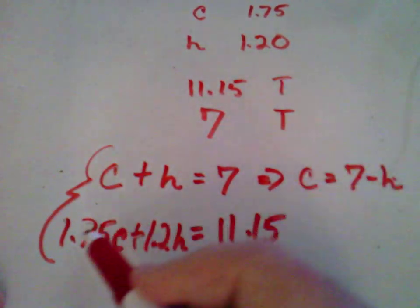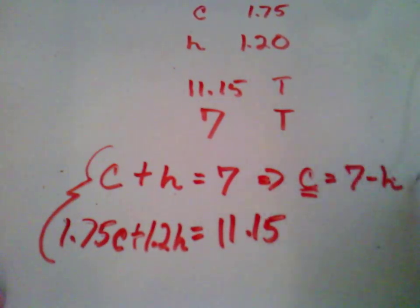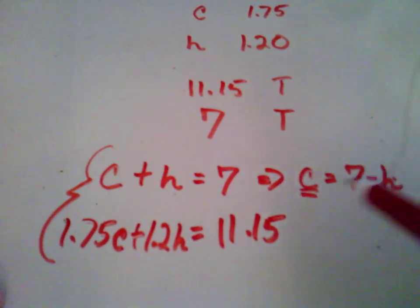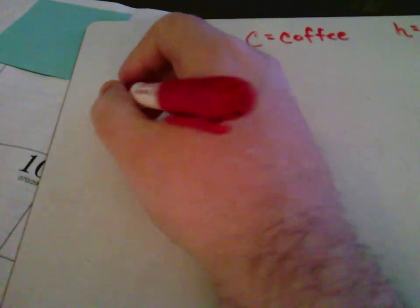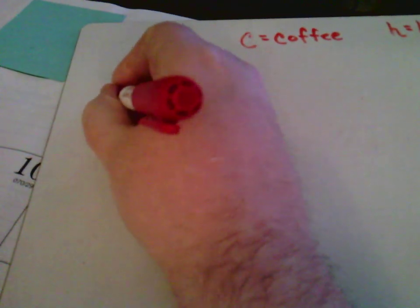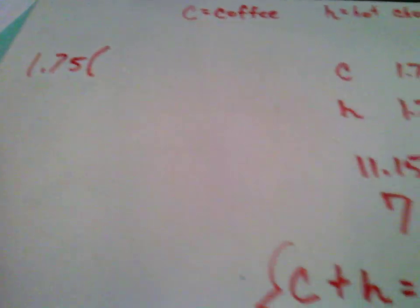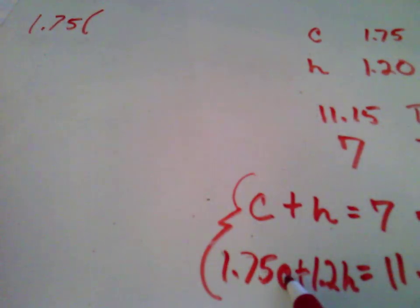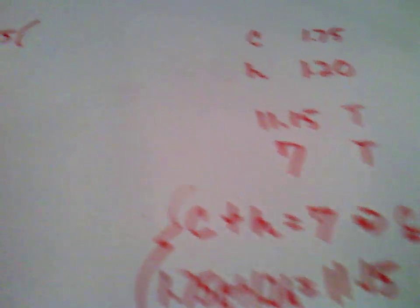All right? Now, we know what C is, right? It's 7 minus H. Well, if we come over here, and I know you can't see that anymore. So, if we come over here, take the original second equation, 1.75 times, that was 1.75 times C, which was coffee. C is equal to 7 minus H.